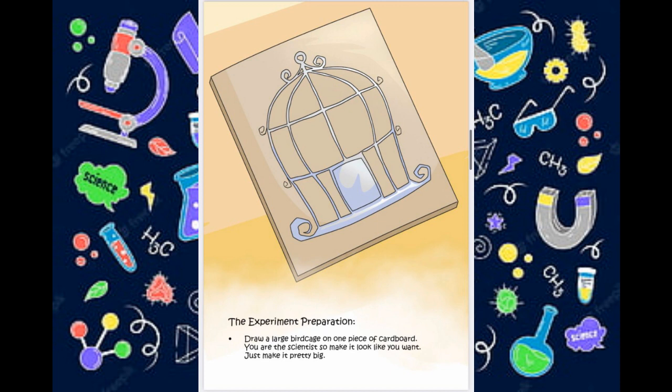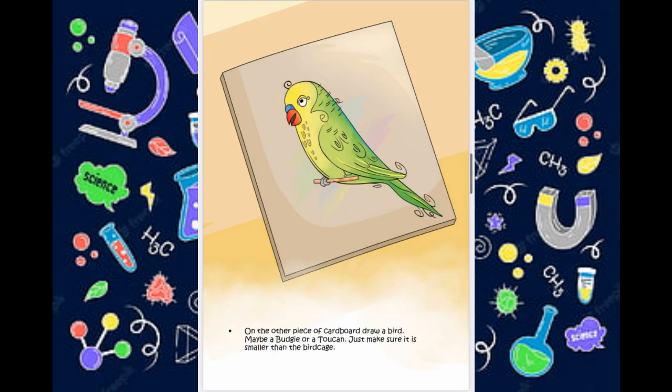The experiment preparation. Draw a large birdcage on one piece of cardboard. You're the scientist to make it look like you want. Just make it look pretty big. On the other piece of cardboard, draw a bird. Maybe a budgie or a toucan. Just make sure it's smaller than the birdcage.